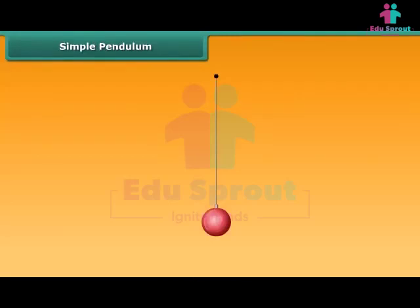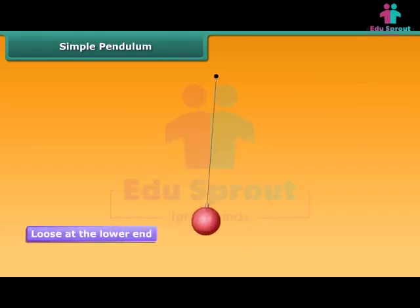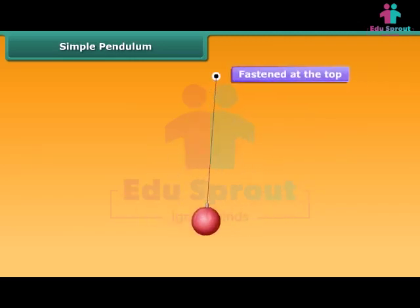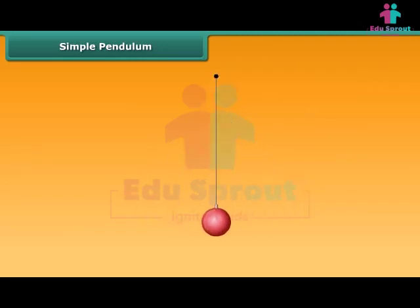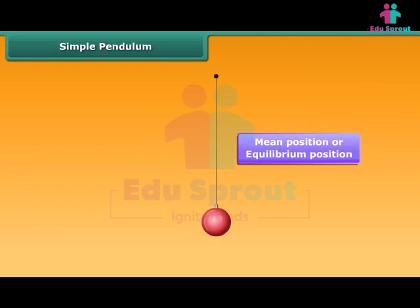A simple pendulum consists of a small metallic ball suspended by a thread. The metallic ball is called the bob of the pendulum. The thread, by which a bob is suspended, is loose at the lower end and is fastened at the top to a stand. When the pendulum is not moving, it is said to be at rest. This position of rest is also known as the mean position or the equilibrium position of the pendulum.